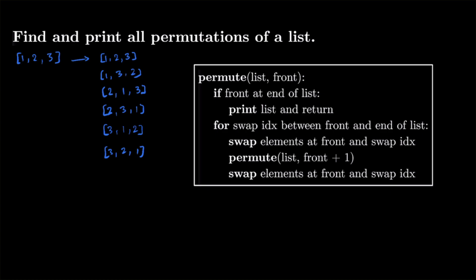Every time we perform a swap, we permute with the new permutation — list is now a new permutation — and we increase front by one so we don't keep swapping values we've already swapped. For example, if we've already looked at the first three indices, we won't go back to them; instead, we'll swap the fourth index onwards with other indices, and so on. Once the recursion stops, we swap back, restoring the list to what it looked like before.